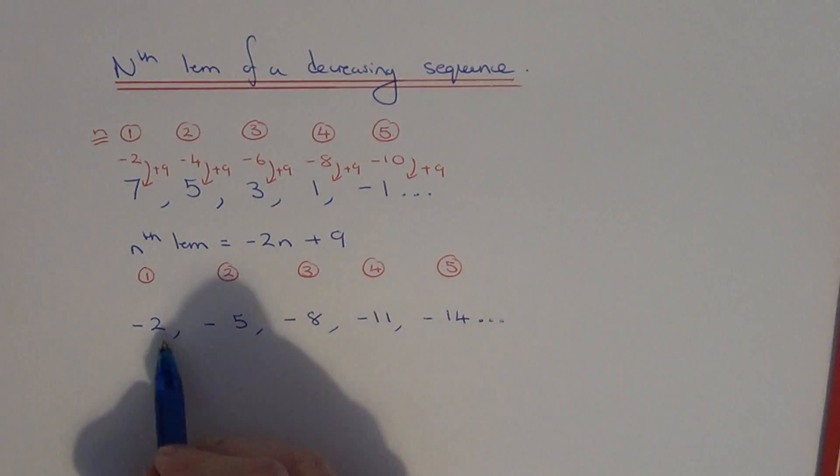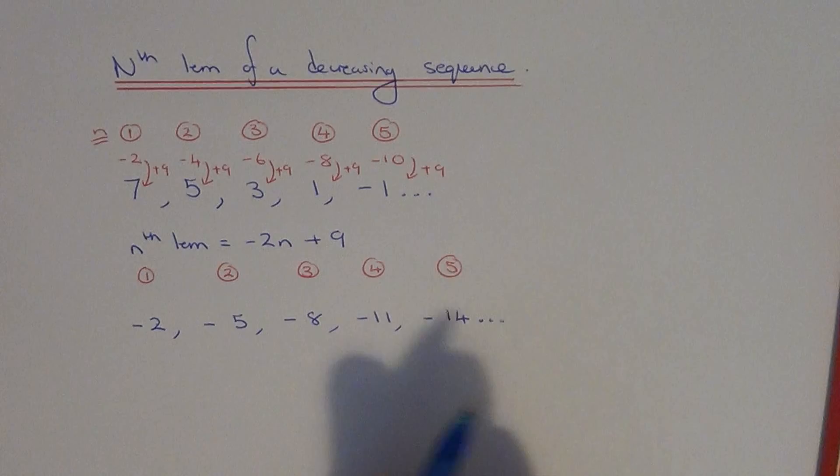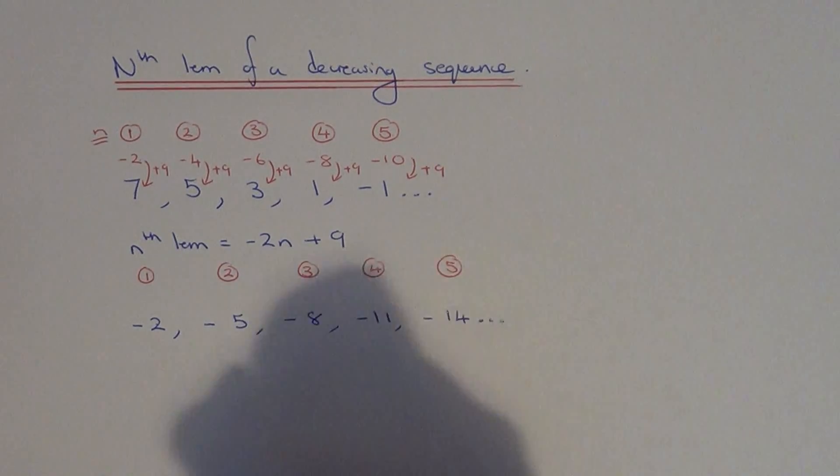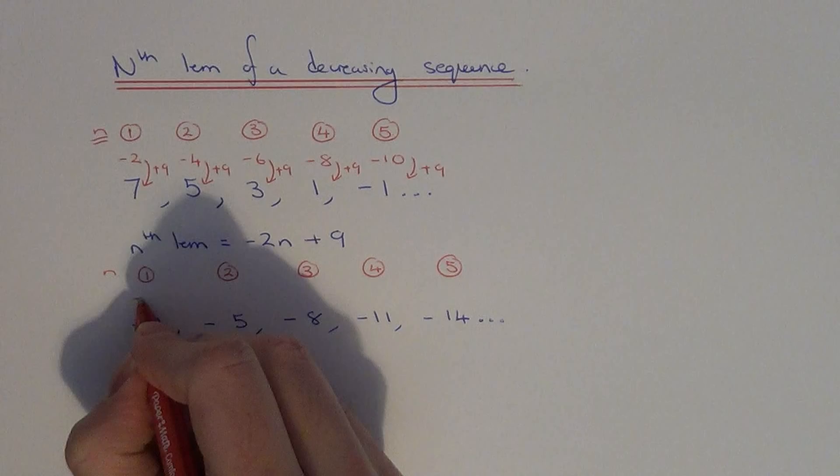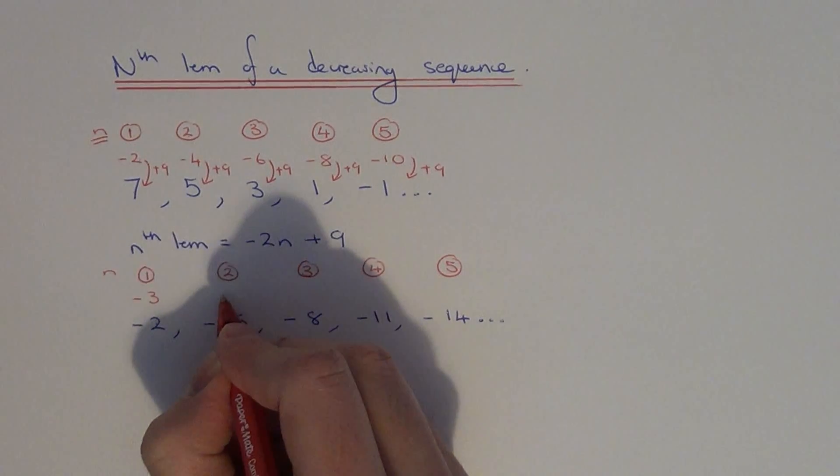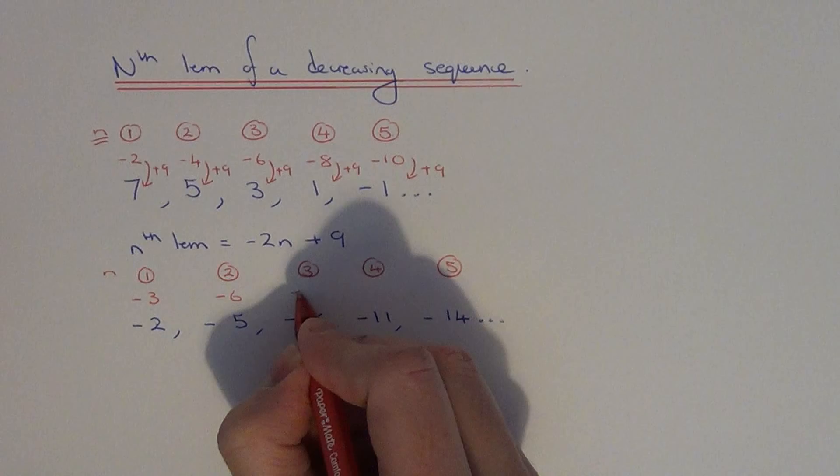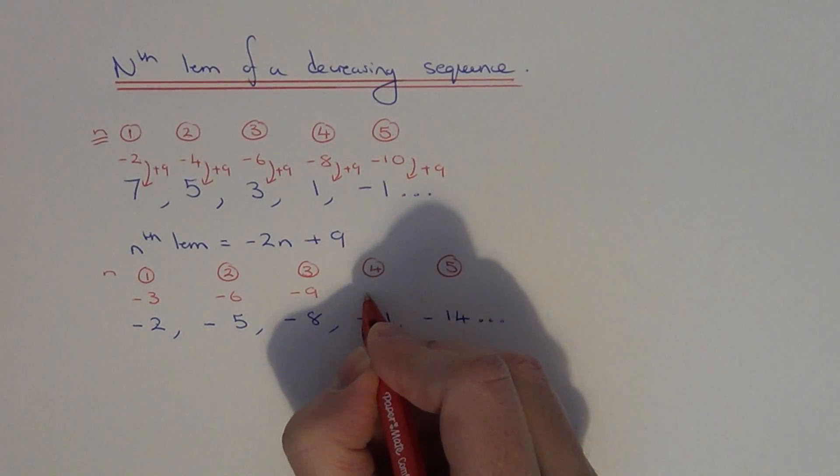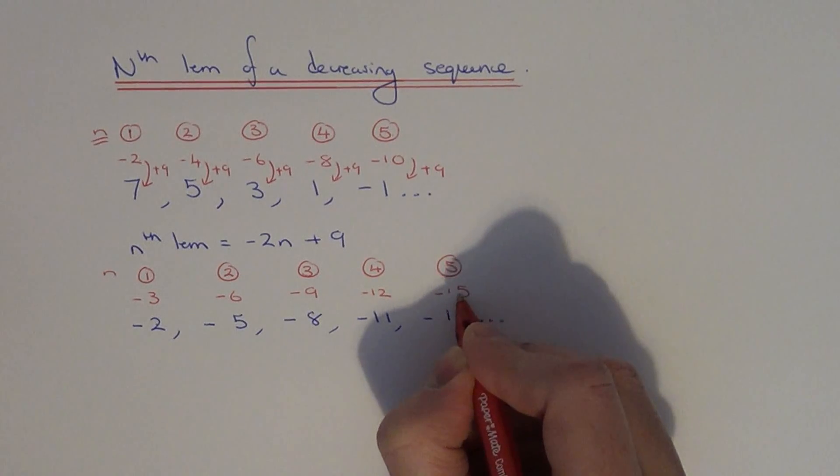So this time our sequence is decreasing by 3 each time. So this tells us to multiply the position numbers at the top by minus 3. So we've got 1 times minus 3 is minus 3, 2 times minus 3 is minus 6, 3 times minus 3 is minus 9, 4 times minus 3 is minus 12, 5 times minus 3 is minus 15.